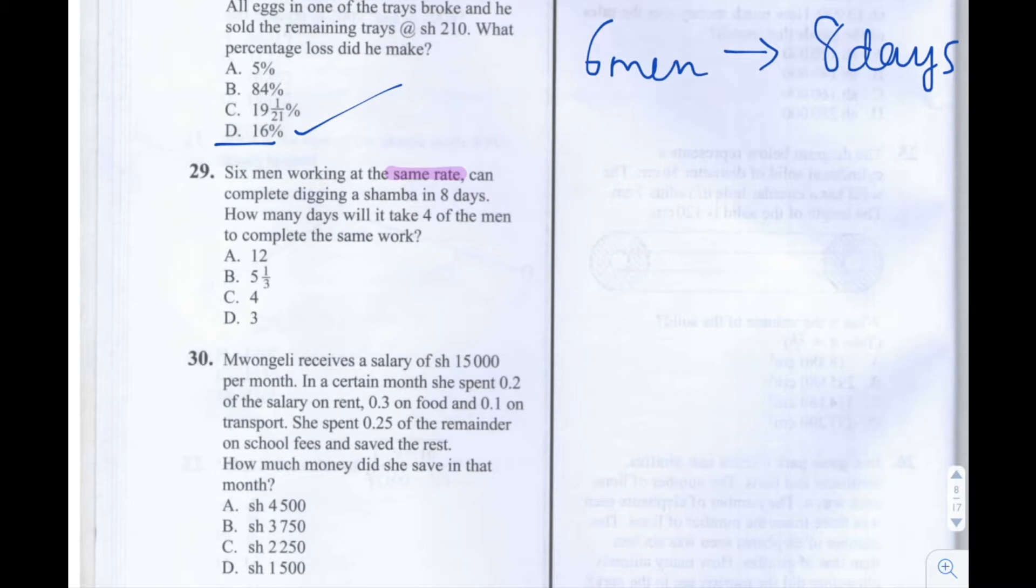So how long will it take four men to do the same work? We have fewer men than six. Four is less than six, which means it will take longer. So it will take more days for the work to be completed. We need to find the number of days X it will take the men to complete the work.